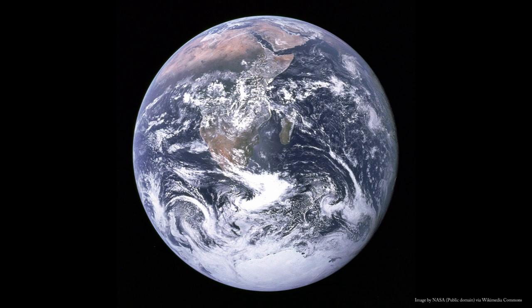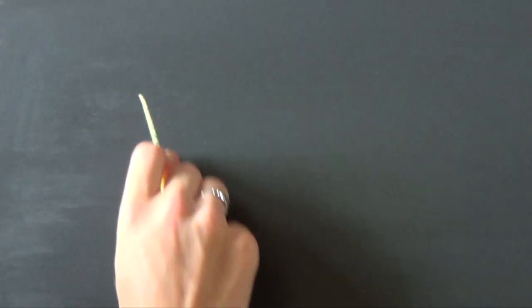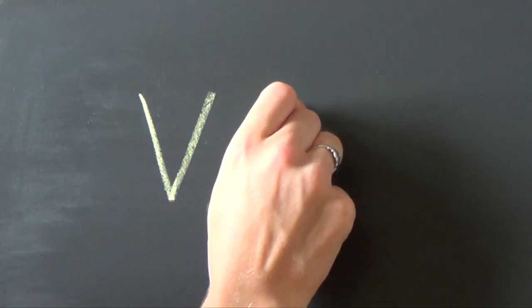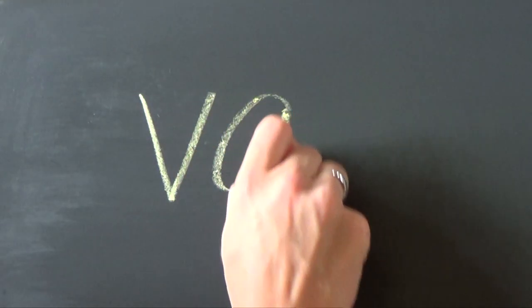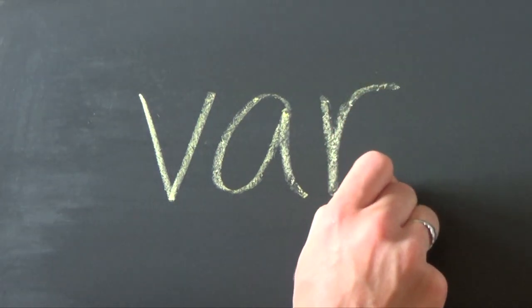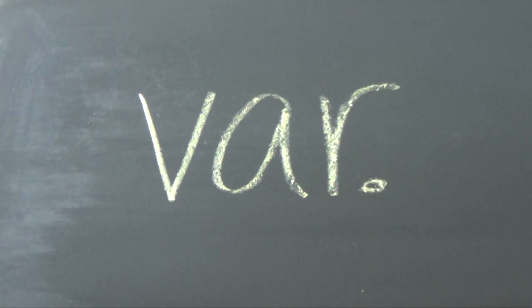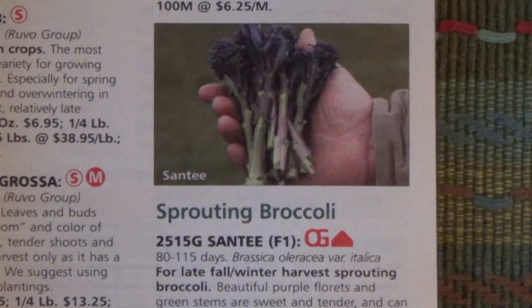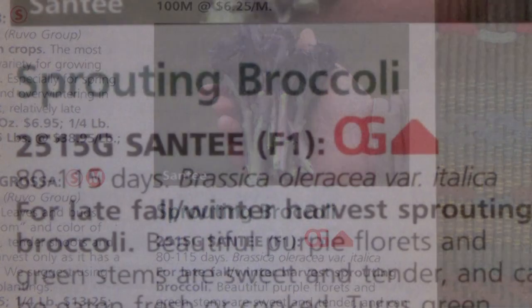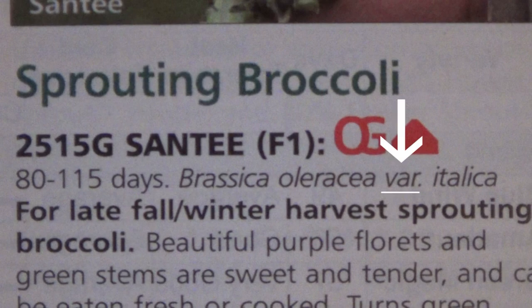You may also see a scientific name followed by the word "var." and another italicized Latin name. This is how a variety is distinguished. A plant variety is a plant that has a marked difference from the typical species as it would occur in nature.